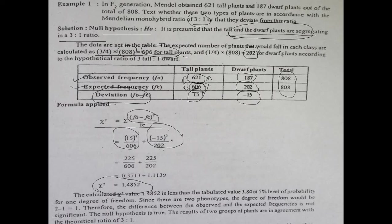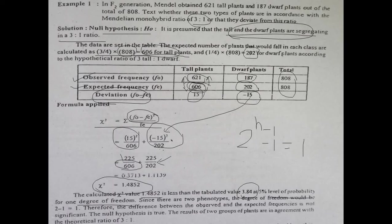The deviation for tall plants is +15 squared, and for dwarf plants it is −15 squared, each divided by their respective expected frequencies. By doing the calculation, we get a chi-square value of 1.4852. The tabular value is 3.84 at the 5% level of probability for one degree of freedom. Degree of freedom is n minus 1: we have two observations (tall and dwarf), so 2 − 1 = 1.